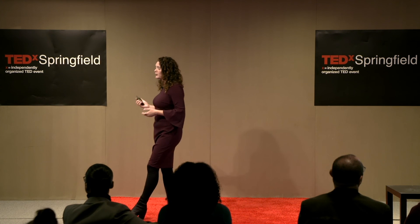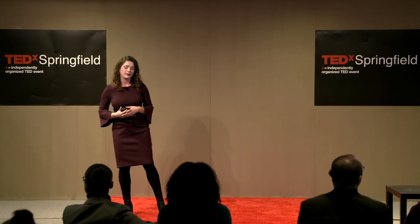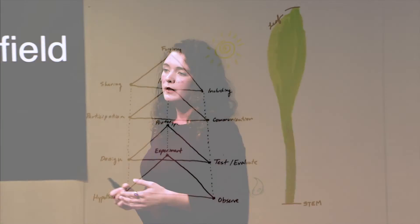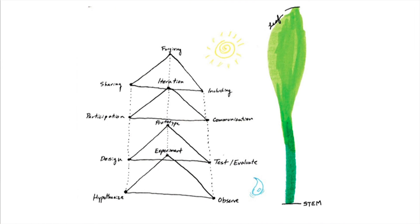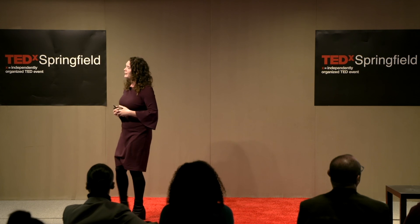I've shared two anecdotes and now I'd like to share one analogy. If we think of science, technology, engineering, and mathematics — the STEM fields — as the stem of a plant, then the arts can be the leaf, free to blow in the wind and respond to the environment while still remaining grounded. I think this is a tremendous opportunity for growth.